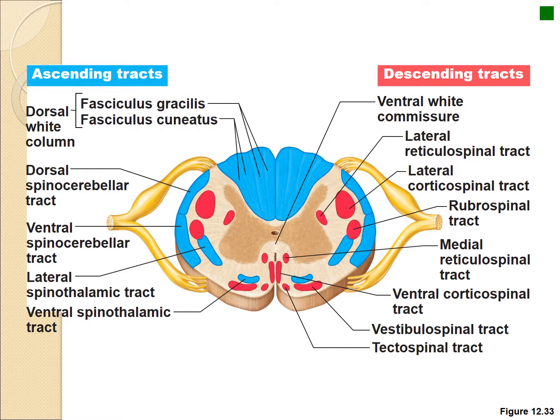You can subdivide the white matter into corticospinal tracts that take very specific information and organize it so the body knows where information is coming from and going. Ascending tracks are usually sensory information coming in; descending tracks are basically motor information going down and out throughout the body.